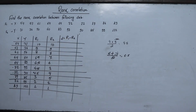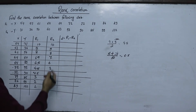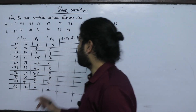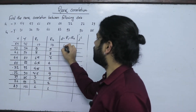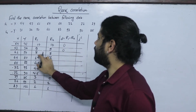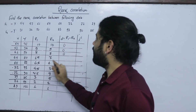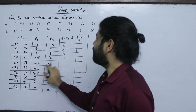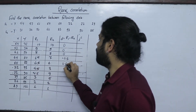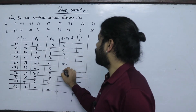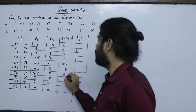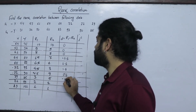Now we compute D = R1 minus R2. The differences are: 10 minus 9 = 0 (approximately), 9 minus 9 = 0, 6.5 minus 7 = −0.5, 6.5 minus 6 = 0.5, 4.5 minus 3 = 1.5, 4.5 minus 4 = 0.5, and 3 minus 5 = −2.